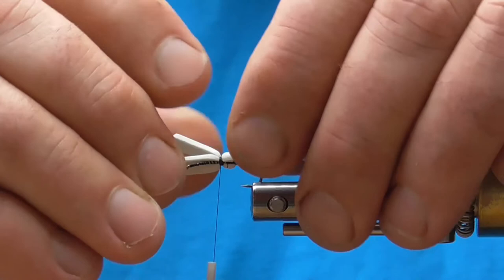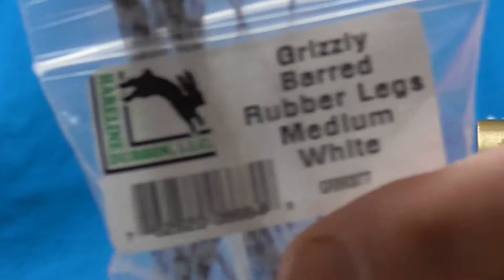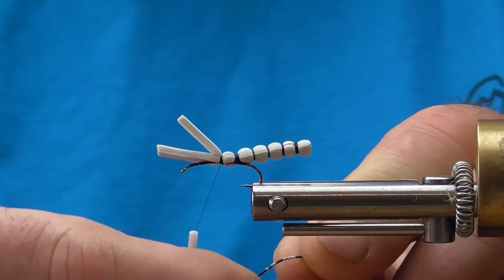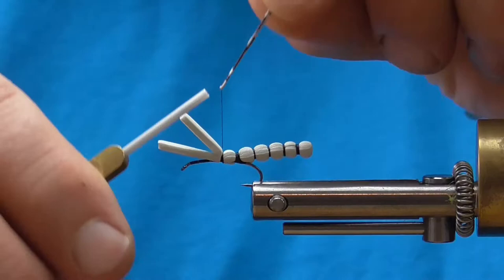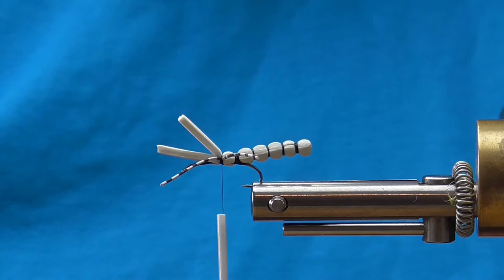This is just 70 denier black thread. I'm using a size 10 terrestrial hook. The next thing, I'm going to put some medium round grizzly barred rubber legs on. These were sitting around from a fly I'd tied previously. I'm going to put those on and adjust those to where I like them. They're going to be longer than I want initially. I'll come back and trim them later.